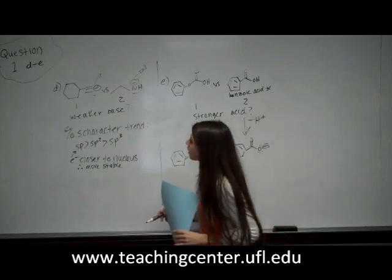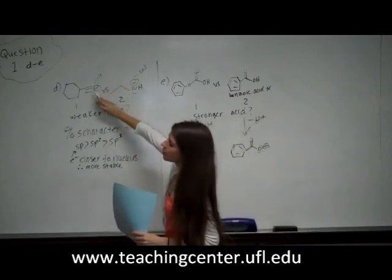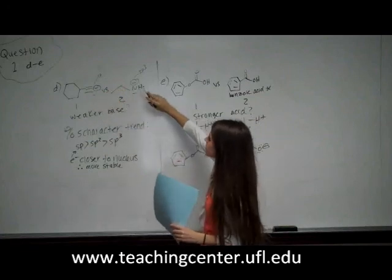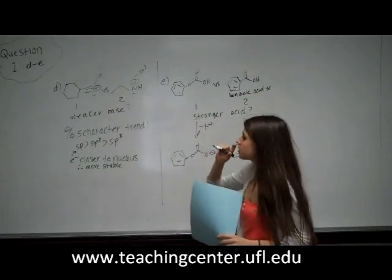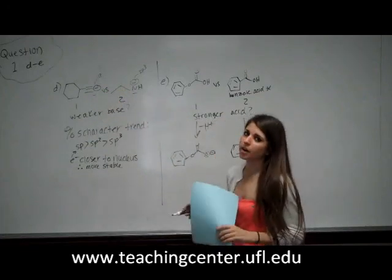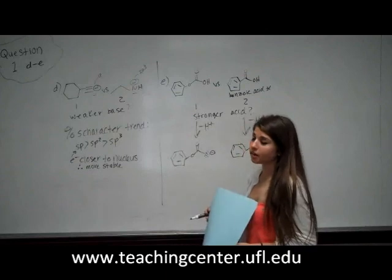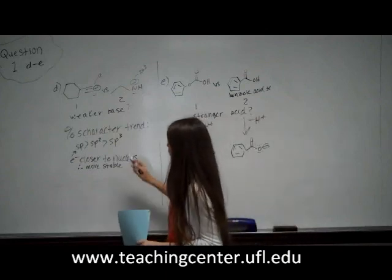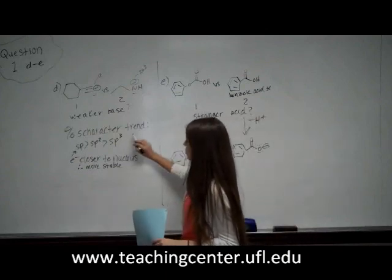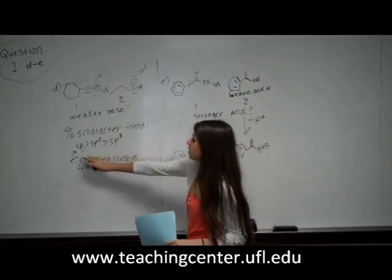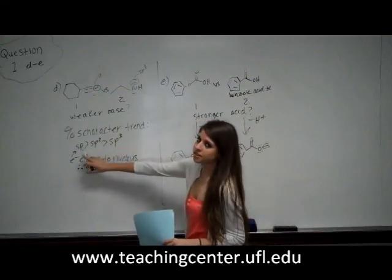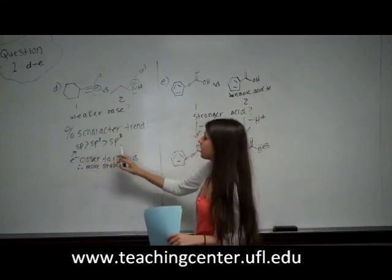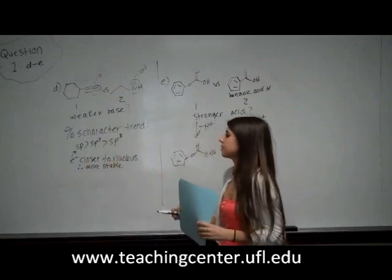But here, this carbon is SP hybridized, whereas this nitrogen is SP3 hybridized. So this is where %S character comes into play. The %S character trend is that SP hybridization has a higher %S character than SP2, which is higher than SP3.